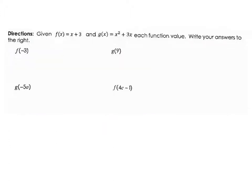For f at negative 3, I plugged in negative 3 over here. So hopefully we got negative 3 plus 3, so for that one you should have gotten 0. For the next one, I'm going to plug in 9 up here. So then that's going to give me 9² plus 3 times 9, and for that one I got 108 for that one.